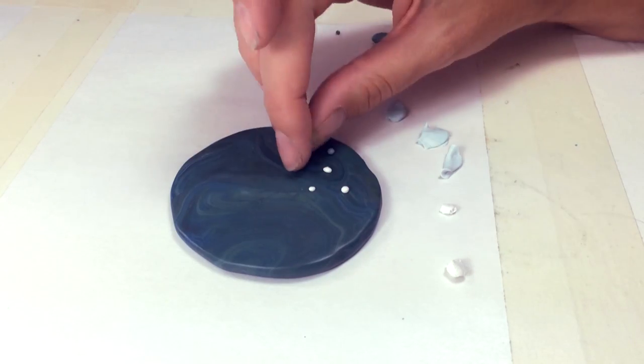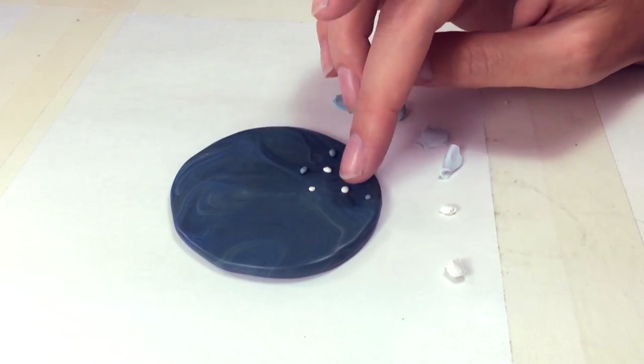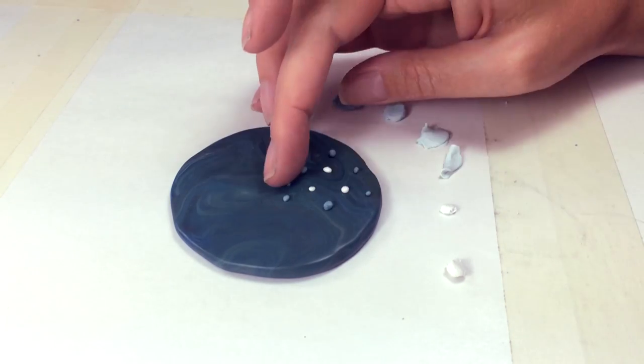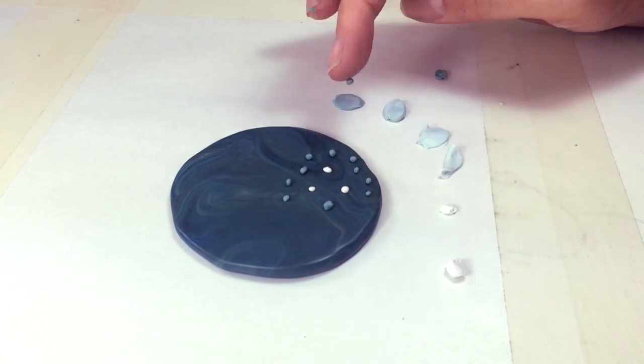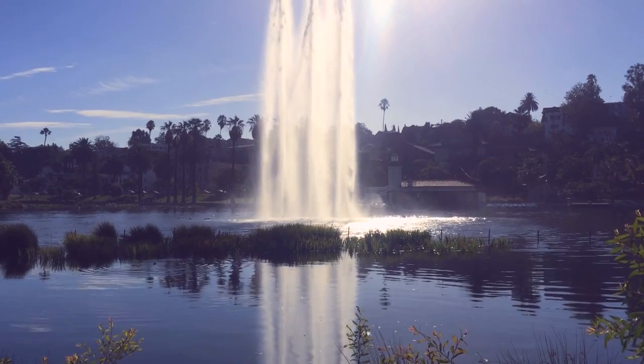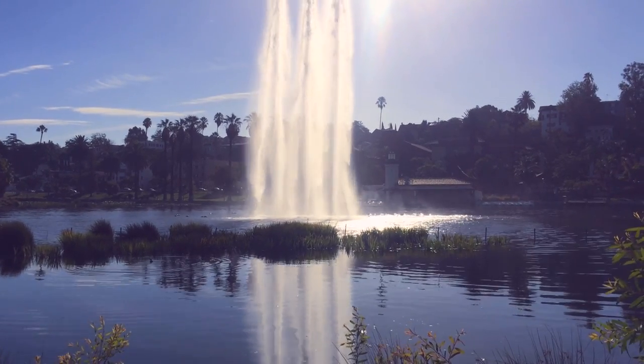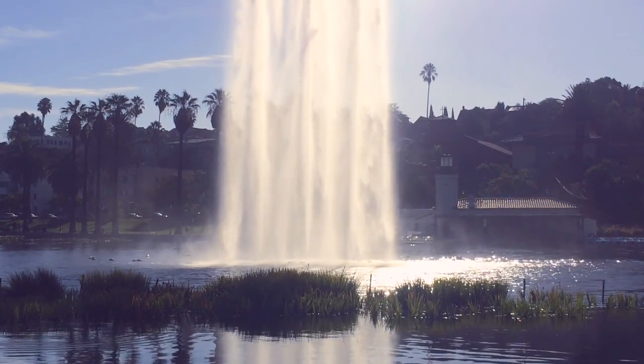Then I take a step back and roll out little balls of the darkest shade and place them along the perimeter, creating the outside edge of the fountain. As you can see, there's this area where the mist in the fountain hits the water of the lake, and that's what I'm doing here.